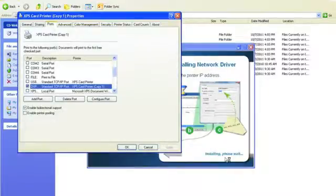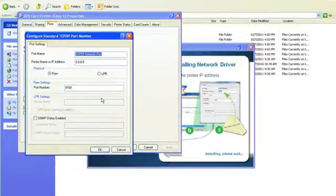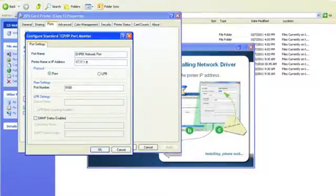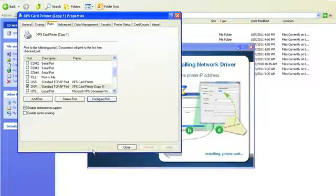Once you receive the properties box of your printer, select the configure port button. Underneath the printer name or IP address, type in your IP address, select OK, and select close.